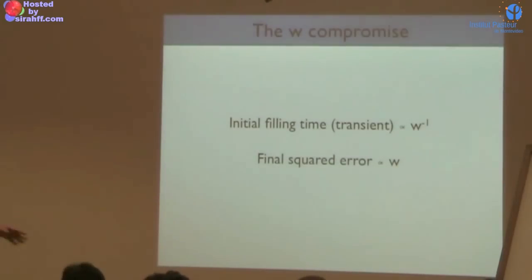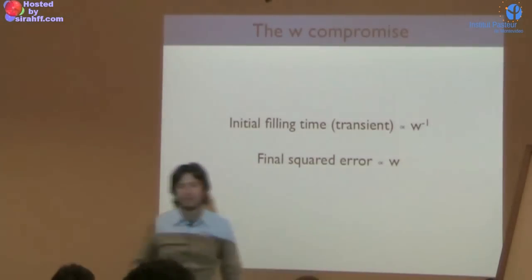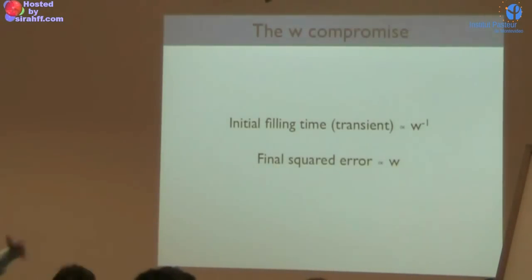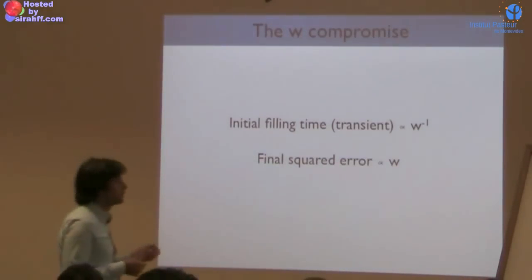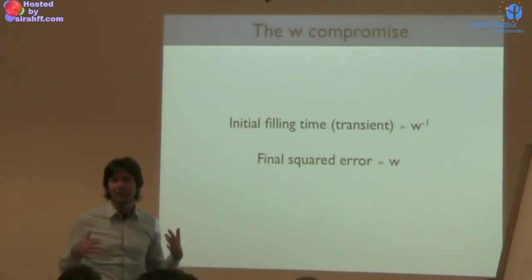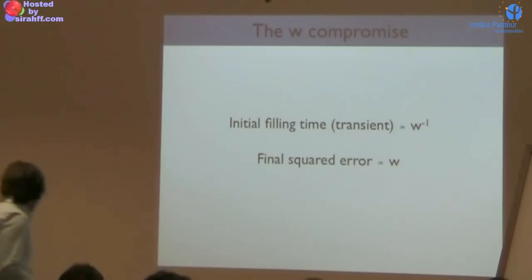You would like a large deposition rate to quickly fill your wells and arrive at a result, but also a small deposition rate because the final error depends on W. With a very small W you get a more accurate estimate, but filling takes a long time. So you must make a compromise. The simple idea: why not change the rate during the simulation? At the beginning use large hills to quickly fill and get a rough estimate, then decrease the rate.